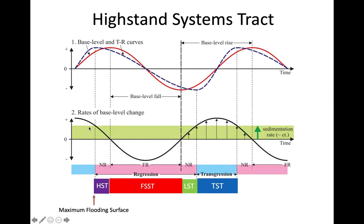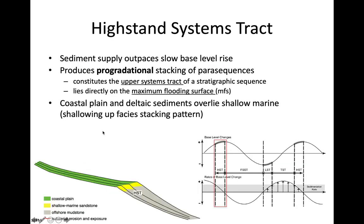The high stand systems track starts at the maximum flooding surface, after which base level begins to fall. At this point sedimentation rate is still positive, but sediment supply starts to outpace base level rise, meaning we start prograding the coastline and moving into regression. We start with the maximum flooding surface — the highest level it will ever be — and it immediately starts falling after that. Even though for a while it looks like it's getting deeper, sediment is outpacing sea level rise. We'll see a vertical stacking pattern showing a shallowing upward sequence.